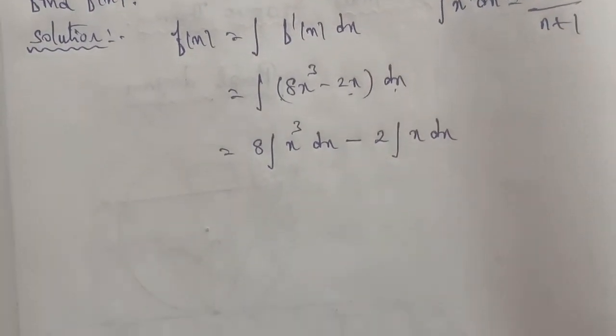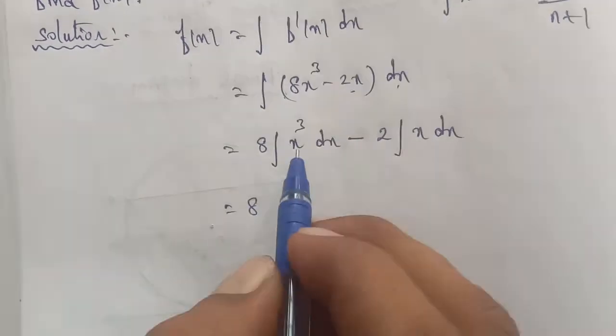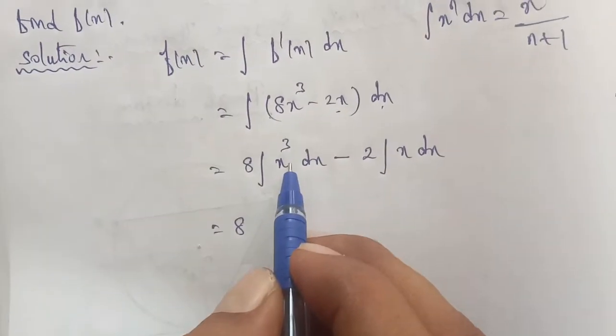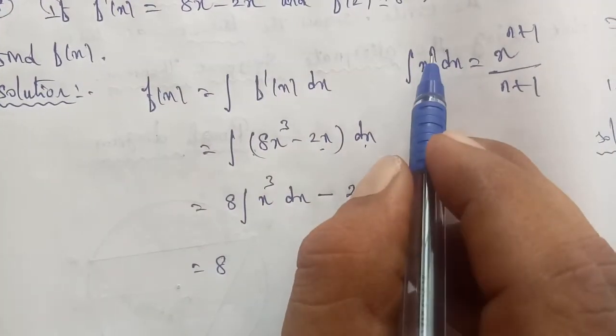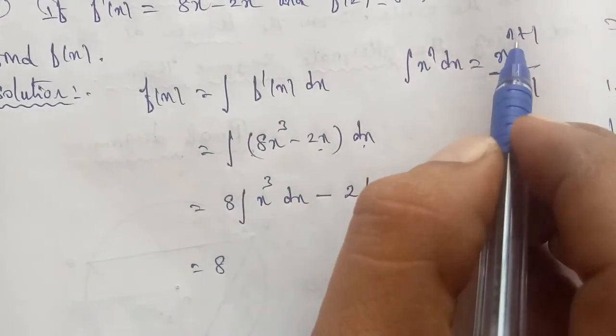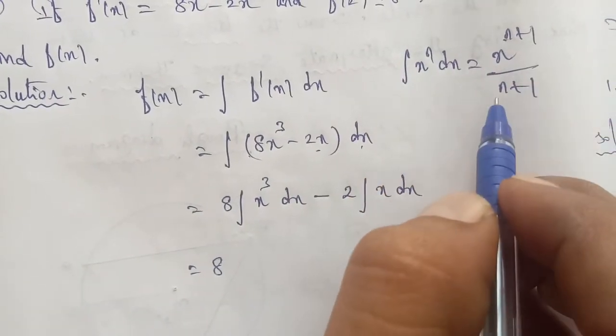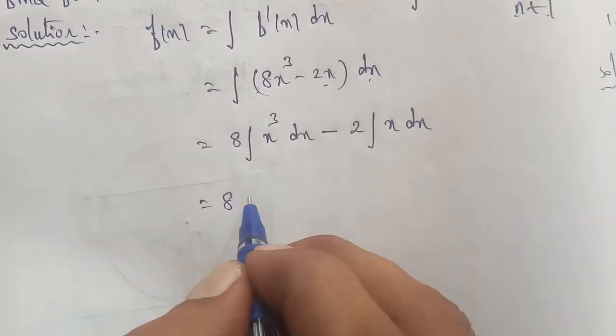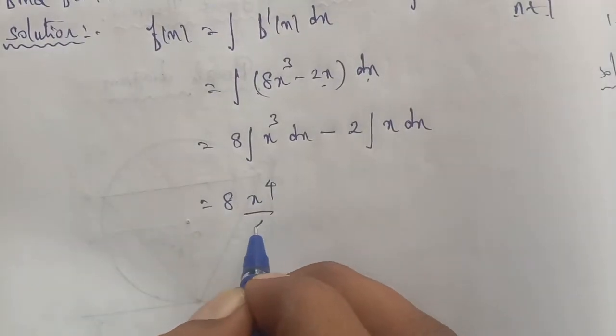Applying the formula: 8 times x^(3+1) divided by (3+1), which is 8 times x⁴ divided by 4.